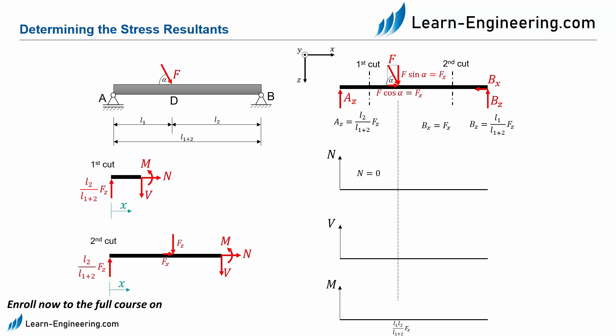In the next step, we calculate the sum of all forces in the Z direction for the first section. Here we calculate V equal to L2 divided by L1 plus L2 times FZ. Since the stress resultant V has a positive result, we enter this in the shear force diagram.